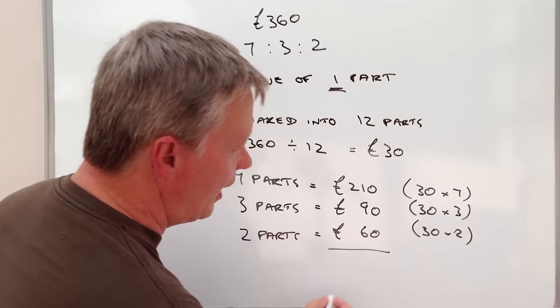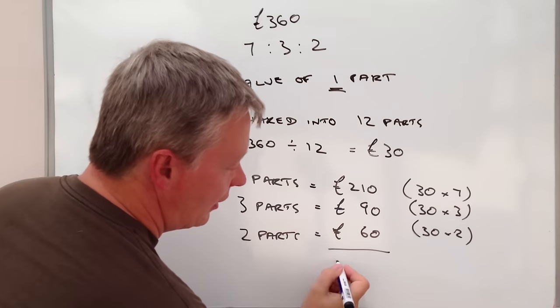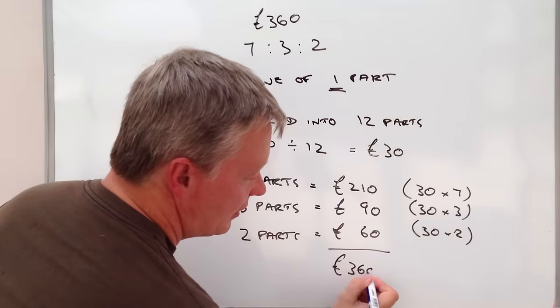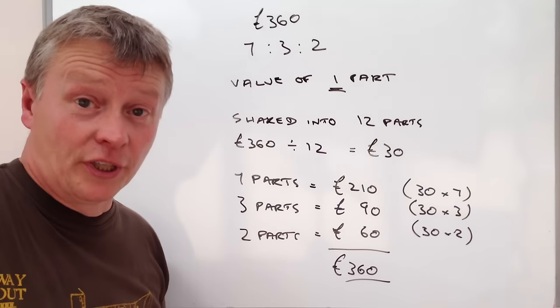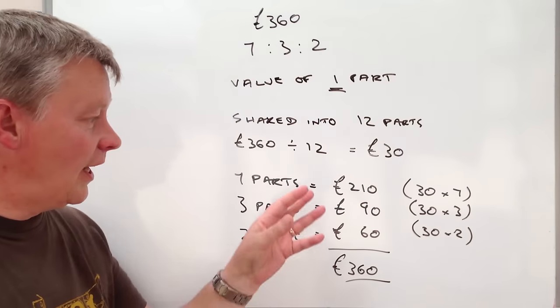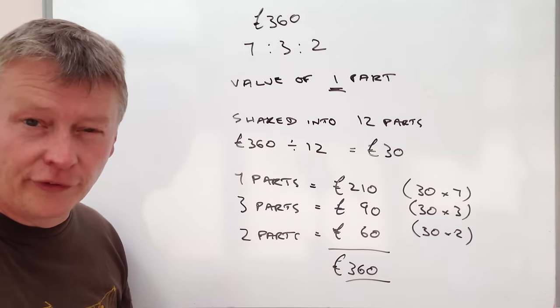And if we add that little lot together, we've got our original amount, which is £360. So in other words, the money was all shared out in accordance with the value of the ratios.